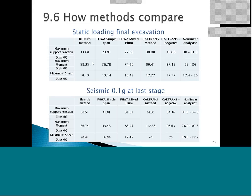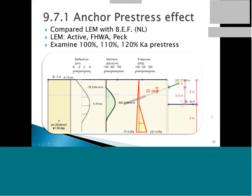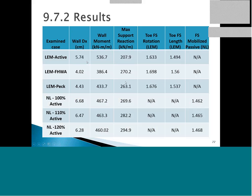Keep in mind that depending on what you choose for your analysis method, you can get a different range of answers for both your support reactions and your wall moments. Also consider the pre-stressing effect: when you pre-stress your wall more, you reduce wall displacement. The active FHWA pressure envelope for limited equilibrium produced the biggest moment on the wall, but when we did the nonlinear analysis the moments were smaller — somewhere in between. Pre-stressing reduces the moments and reduces wall displacement, while at the same time increasing the support reaction.